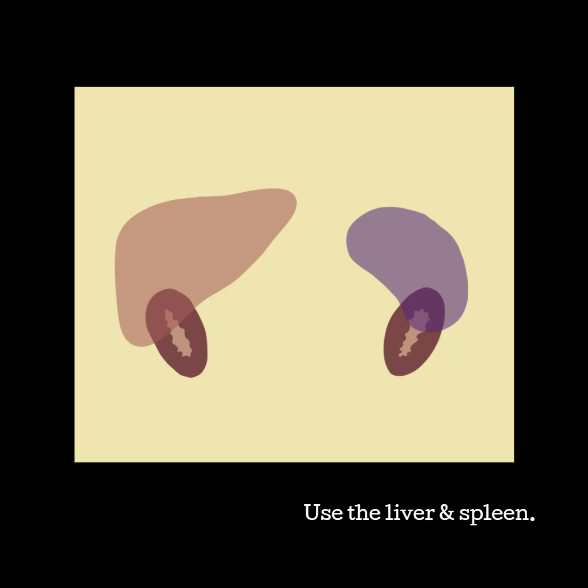The same is true for the spleen. Finding the long spleen and then angling inferior will give you a view of the left kidney. This will also remind you to use the spleen and liver as sonographic windows.